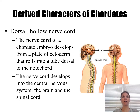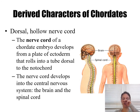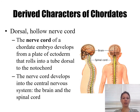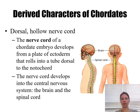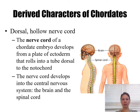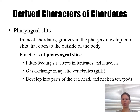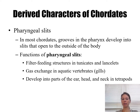In the tunicate and the lancelet, they do have a legitimate nerve cord and notochord even in the adults, but for vertebrates — animals that have a backbone — they'll have these traits only in the embryos. Pharyngeal slits can be used as filter feeding structures in tunicates and lancelets.